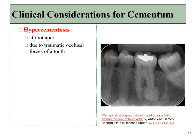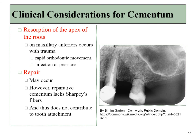Sometimes overproduction of cementum can occur, especially in response to trauma. This generally occurs at the root apex, and on a radiograph you can see the layer of cementum is significantly thickened. The opposite can also occur — resorption of cementum and dentin can both happen. This is a totally normal occurrence during exfoliation of a tooth, but can be triggered accidentally later in life, especially in response to trauma or excessive orthodontic movement. If cementum is repaired, it usually lacks Sharpey's fibers and therefore does not contribute to the attachment of the tooth to the alveolar socket.